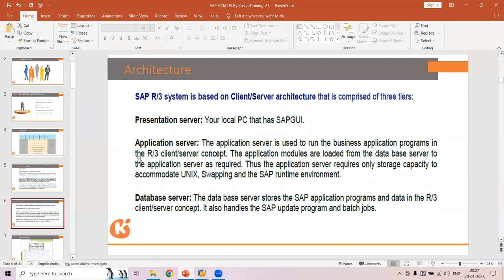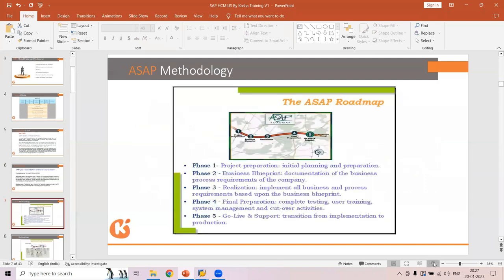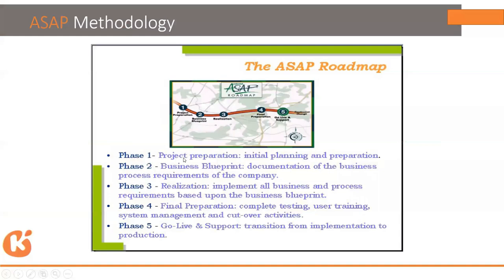Every implementation has a methodology. With SAP HCM, there is the ASAP — Accelerated SAP methodology — which has five phases: Project Preparation, Business Blueprint, Realization, Final Preparation, and Go-Live and Support. The work is more or less the same as other methodologies but the terminology is different.